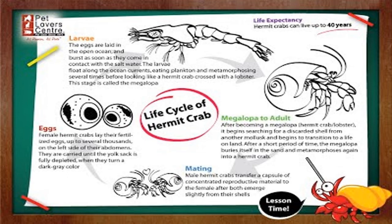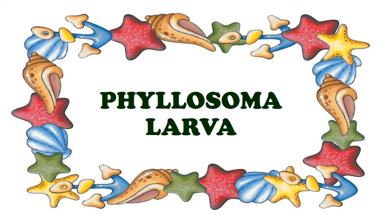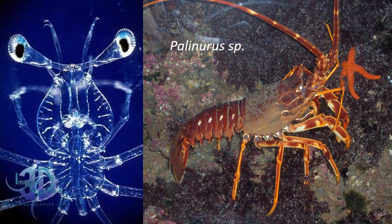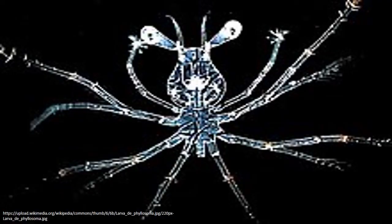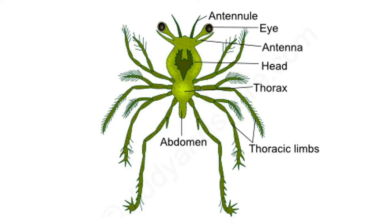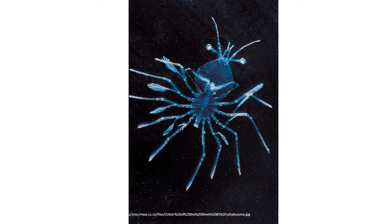Phyllosoma: the larva of Palinurus, the spiny crab or rock lobster, is called Phyllosoma or glass crab. It is a modified Mysis stage. It is remarkably large, flattened, leaf-like, delicate and glassy. The body is distinguished into a head, a transparent thorax and abdomen. The eyes are compound and stalked. Out of six pairs of thoracic appendages, the first or maxillipedes are rudimentary, the second are uniramouse, the third are well-formed biramous, succeeded by the fourth, fifth and sixth pairs of long biramous legs. A segmented but limbless abdomen is present. Before reaching the adult stage, it undergoes several moltings.